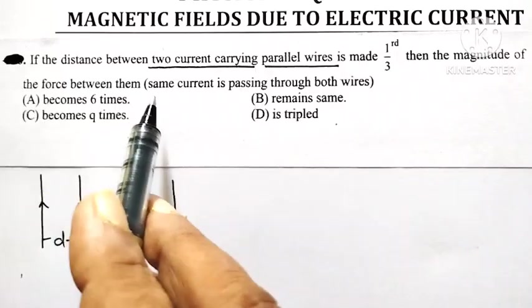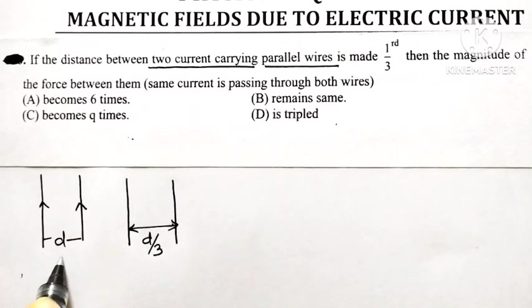Then the magnitude of force between them, initially if force is f and later on when distance is reduced to d by 3, say new force is f dash. So we have to find out the value of f dash in terms of f.